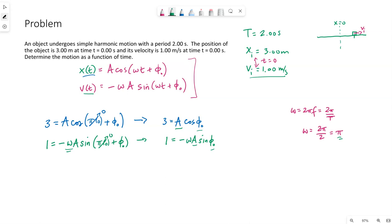Now I can either solve one of the equations for A and plug it in the other, or I'm actually going to take this bottom equation for velocity and divide it by the position function. When I do that, A cancels, and this leaves me with one third is equal to negative omega times sine over cosine is tangent. So that gives me tangent of phi naught.